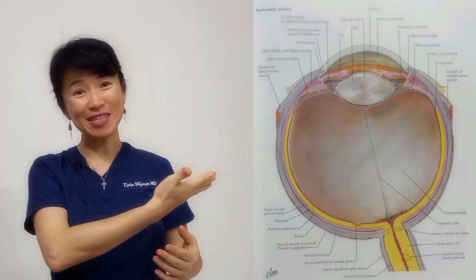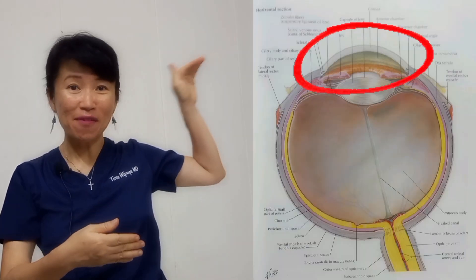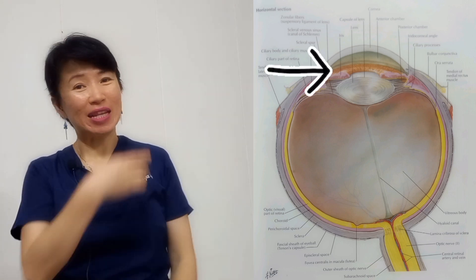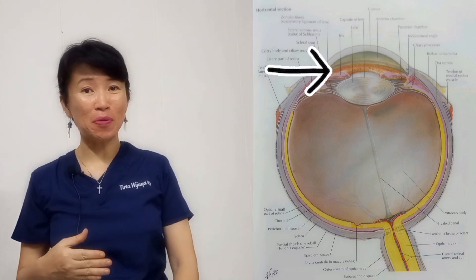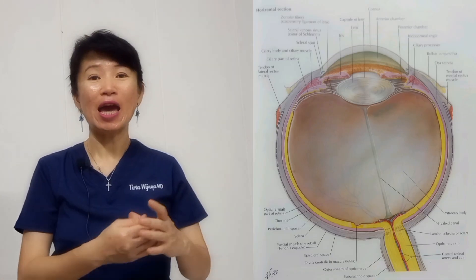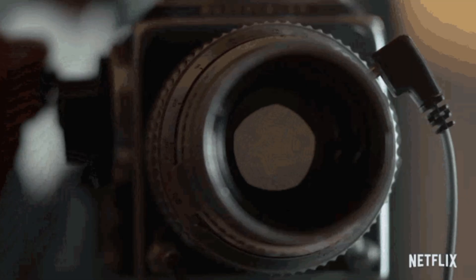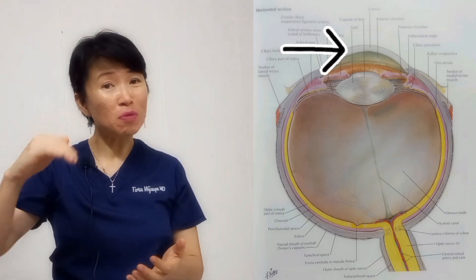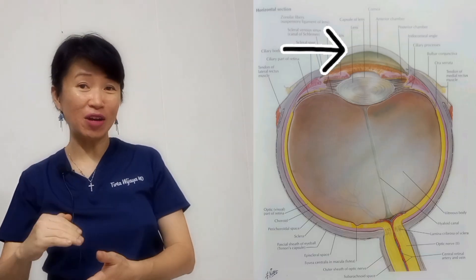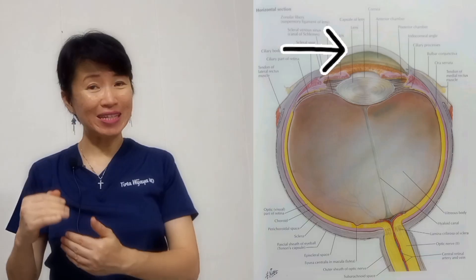Before I talk more about these conditions, I will briefly introduce you to the anatomical structures of the eye and their functions so you'll know what I'm talking about throughout this video. This is the horizontal section of the eye, and that is the front part. This is the iris — from Greek, where it means rainbow. It is the colorful part of the eye surrounding the pupil. It adjusts the size of the pupil to control the amount of light entering the eye by expanding and contracting, very similar to a camera shutter.